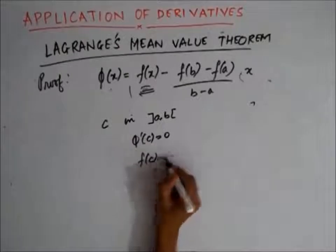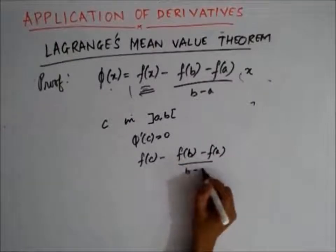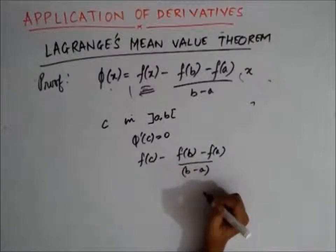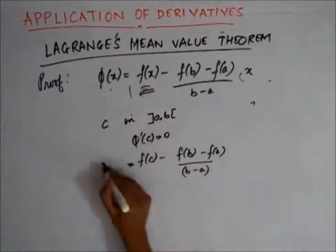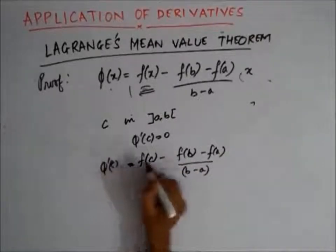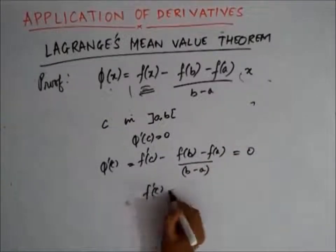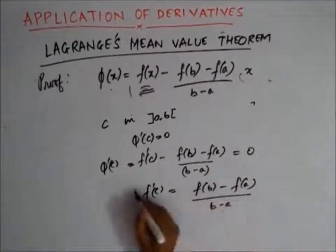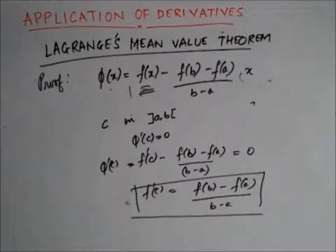That means φ'(c) equals 0, which gives us f'(c) minus [f(b) minus f(a)] divided by (b minus a) equals 0. That means f'(c) is equal to [f(b) minus f(a)] divided by (b minus a). So this is what Lagrange's Mean Value Theorem states, and we were able to prove the theorem.